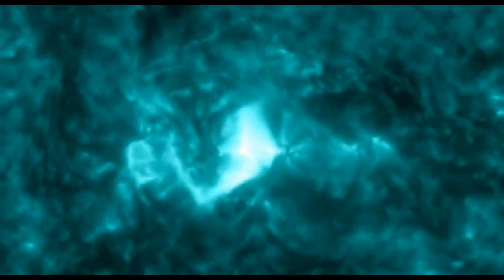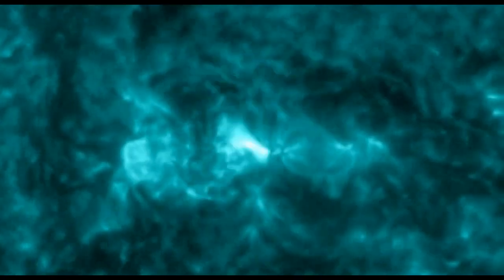Sunspot AR3814 has a mixed polarity magnetic field that makes it a threat for strong solar flares. This morning it exploded while directly Earth-facing. The ultraviolet flash, a category M1.2 solar flare, ionized the top of Earth's atmosphere and caused a brief shortwave radio outage over the Pacific Ocean.